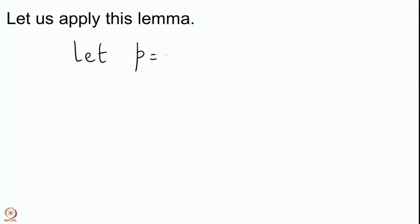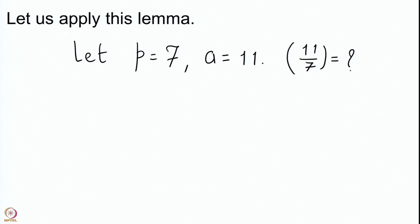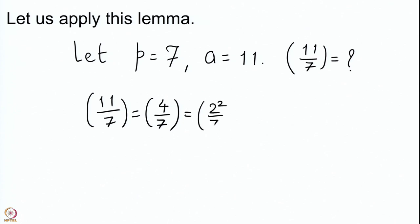Suppose p is 7 and we want to compute the Legendre symbol for a equal to 11. When you go modulo 7, 11 is 4. So (11/7) is nothing but (4/7); the Legendre symbols are the same, and we know that 4 is the square of 2, so this is equal to 1. But let us also verify this using Gauss Lemma.